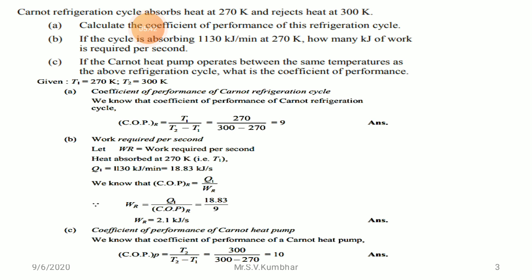how many kilojoules of work is required per second? Question three: if the Carnot heat pump operates between the same temperatures as the above refrigeration cycle, what is the coefficient of performance? TL = 270 K and TH = 300 K are given.